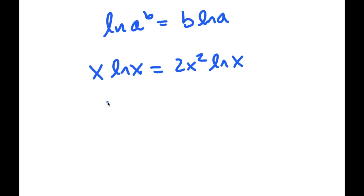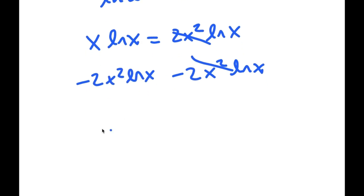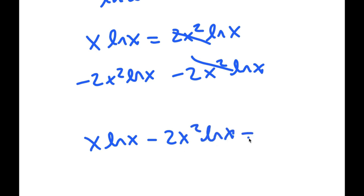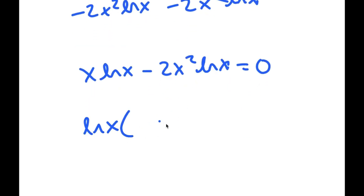Now I'm going to subtract 2x squared times ln x on both sides, so I get x times ln x minus 2x squared times ln x is equal to 0. And now if I factor out ln x, I get ln x times (x minus 2x squared) is equal to 0.